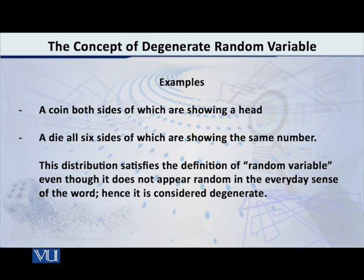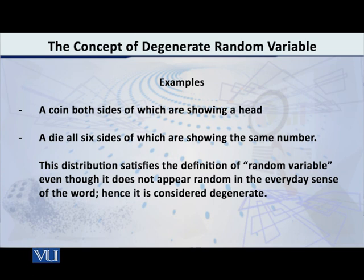Degenerate — ek isko samajhane ka yeh tariqha bhi hai, ki woh jo x-axis hai na, woh goya as if woh collapse hoke, itna collapse hua ke it became only one point. Aur sari jo bhi cheese hai woh us eek point ke uper kheri hui. For example, abhi jo mein ne aapko three kaha, ke us die ke har taraf teen hi dots hain. Iska matlab hai ke woh jo x-axis ke uper number three hai, iske uper hi aapki distribution hai. It is a vertical line, the height of which is one.